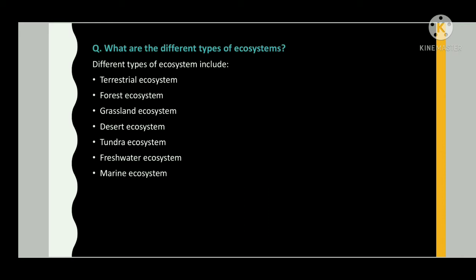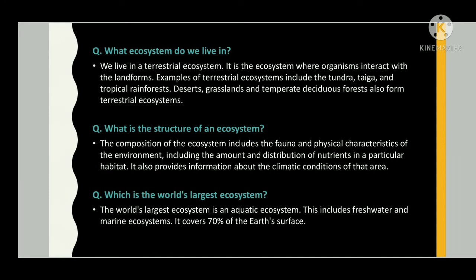Different types of ecosystems include terrestrial ecosystem, forest ecosystem, grassland ecosystem, desert ecosystem, tundra ecosystem, and marine ecosystem. We live in a terrestrial ecosystem, where organisms interact with land forms. Examples include tundra, taiga, tropical rainforest, deserts, grasslands, and temperate deciduous forests. The structure of an ecosystem includes the fauna and physical characteristics of the environment, including the amount and distribution of nutrients in a particular habitat, and information about the climatic conditions of that area.